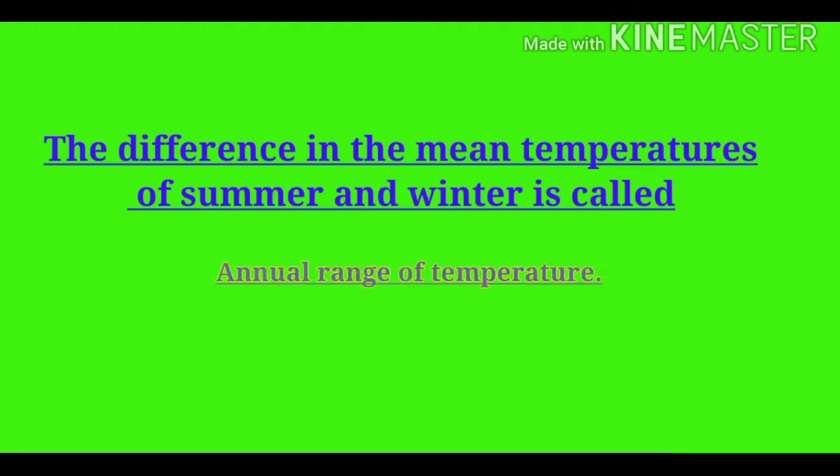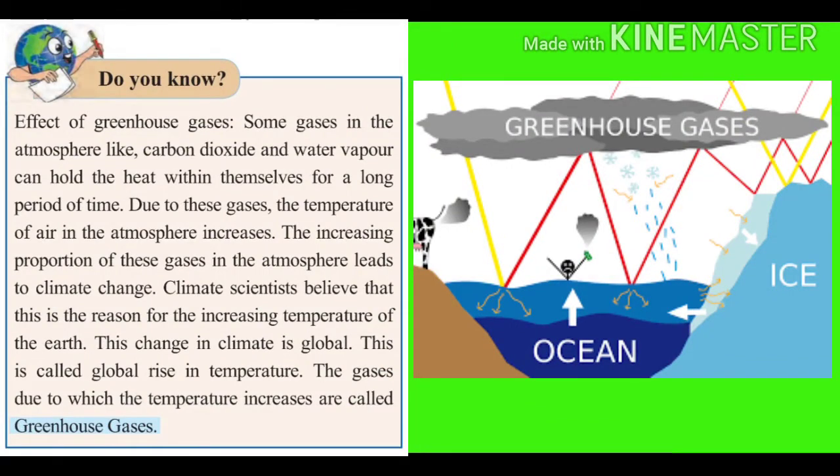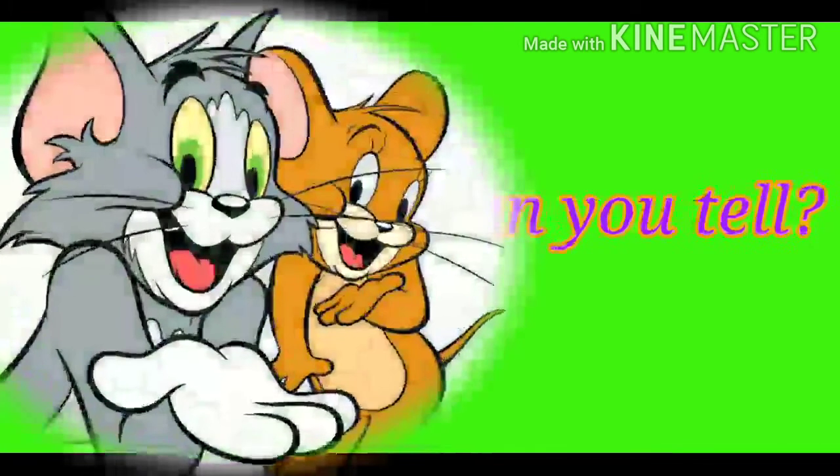The difference in the mean temperatures of summer and winter is called annual range of temperature. Do you know about the effect of greenhouse gases? Some gases in the atmosphere, like carbon dioxide and water vapor, can hold the heat within themselves for a long period of time. Due to these gases, the temperature of air in the atmosphere increases. The increasing proportion of these gases in the atmosphere leads to climate change. Climate scientists believe that this is the reason for the increasing temperature of the earth. This change in climate is global. This is called global rise in temperature. The gases due to which the temperature increases are called greenhouse gases.